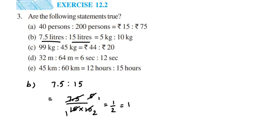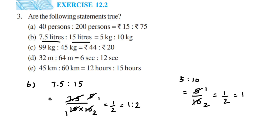The second ratio is 5 kg is to 10 kg, so 5 is to 10. Converting to a fraction: 5 by 10. Cancelling: 5 ones are 5, 5 twos are 10 — we get 1 by 2, which is the ratio 1 is to 2. We got 1 is to 2 and 1 is to 2 — they are equal, so the second statement is also TRUE.